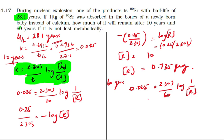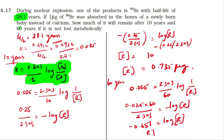So 0.025 times 60 divided by 2.303 equals negative log R. This gives 0.651 equals negative log R, so log R equals minus 0.651. Taking antilog, R equals 10 to the power of minus 0.651.